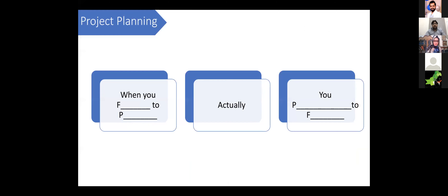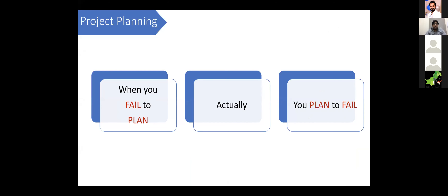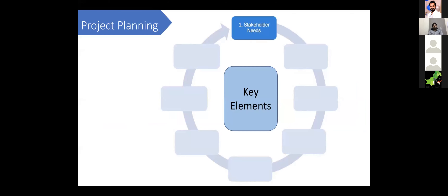Before going into detail on project planning, there are some blanks to fill in. 'When you fail to plan, you are planning to fail.' Planning is the key to success when designing your project. There are multiple key elements whenever we are planning a particular project. First: stakeholder needs — what the funders need, what their main thematic areas are. In GCF and LCF, there are categories like agriculture, energy, water, and waste, with major categories and subcategories. We have to think about which section we fall under.